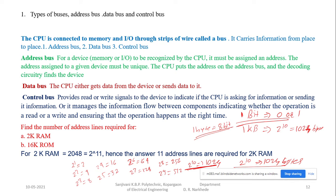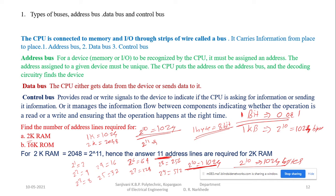Now if I want 2 kilobytes of memory, how many address lines are needed? For 1K memory, 10 address lines are sufficient. 2K means 2 to the power 11 - since 2 to the power 10 is 1024 (which is 1K), 2K is 2048. So for 2K memory I require 11 address bus lines.